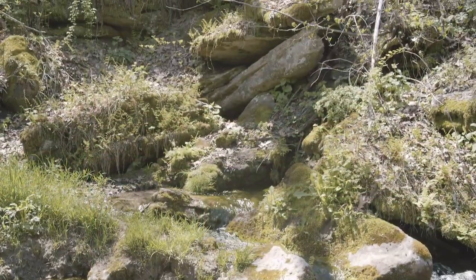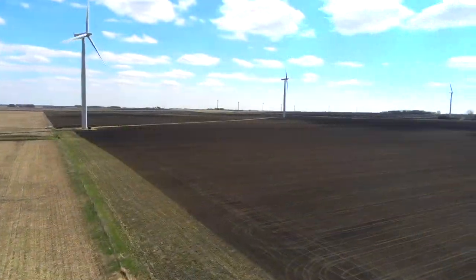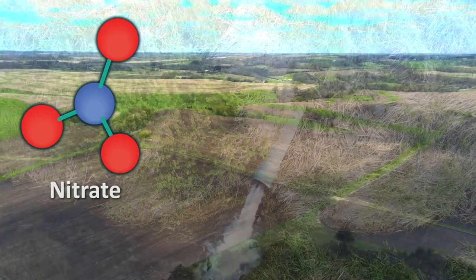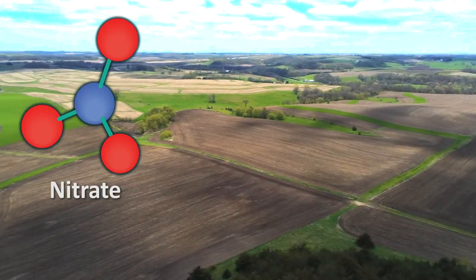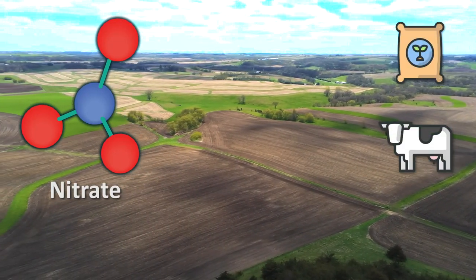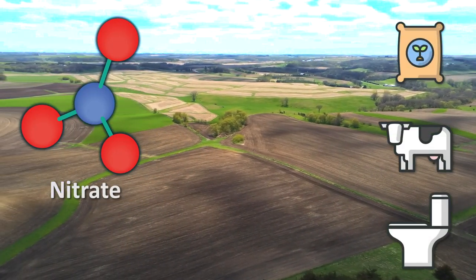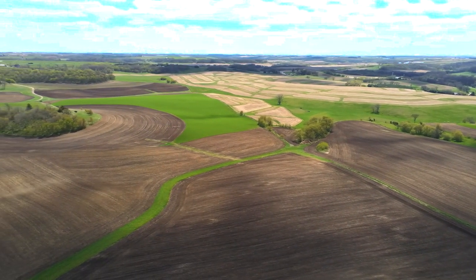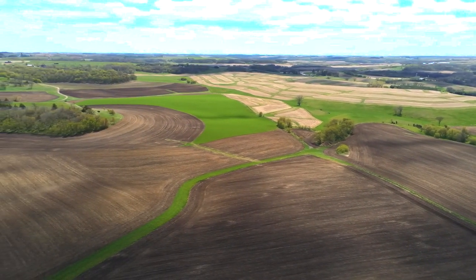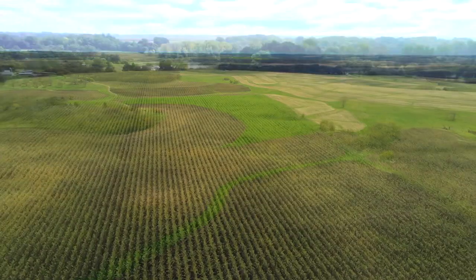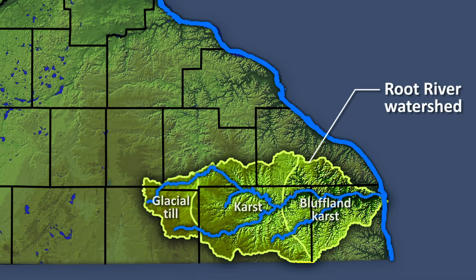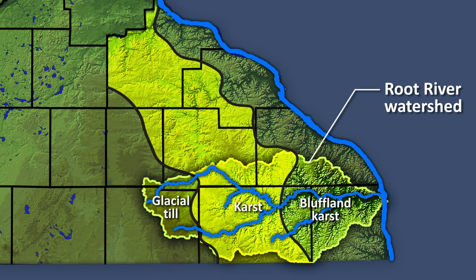One of the most mobile contaminants found in Minnesota groundwater is a form of nitrogen called nitrate. Although nitrate is an essential nutrient, excess sources primarily come from fertilizer, animal manure, and human waste. In southeast Minnesota, where the landscape is less populated, nitrate largely comes from cultivated cropland. Let's examine how nitrate can move into drinking water and surface water across three unique landscapes in southeast Minnesota.